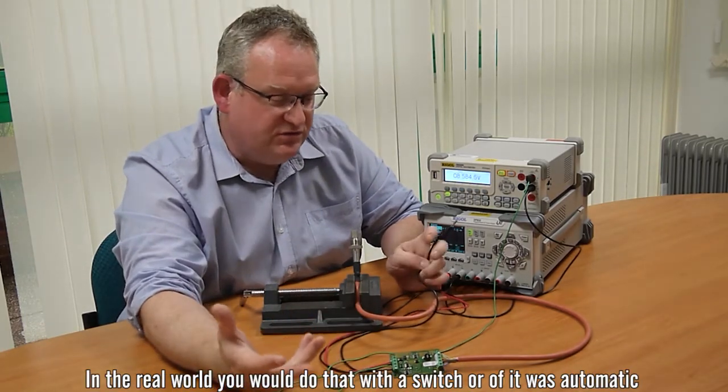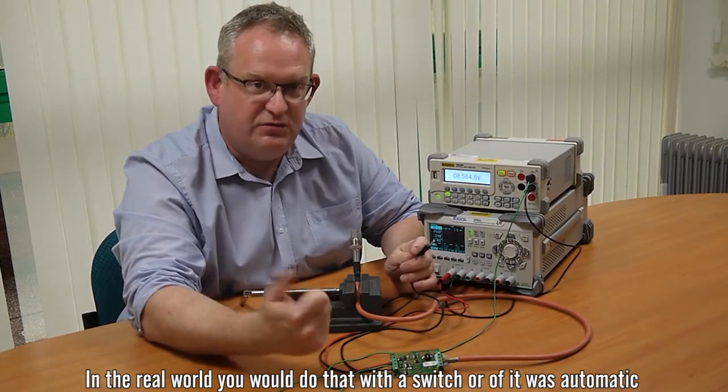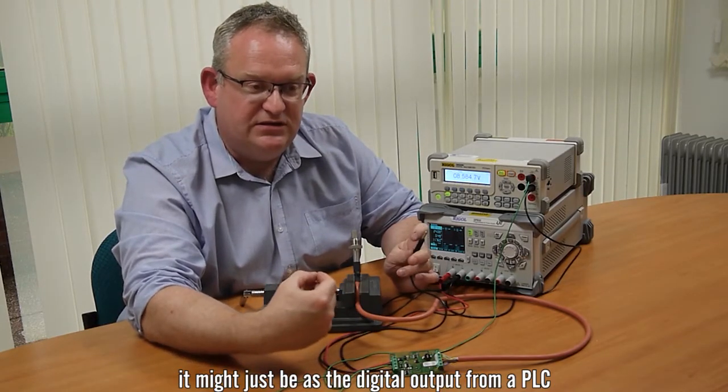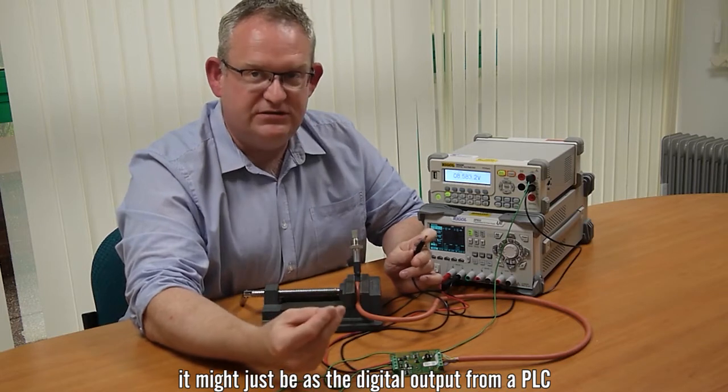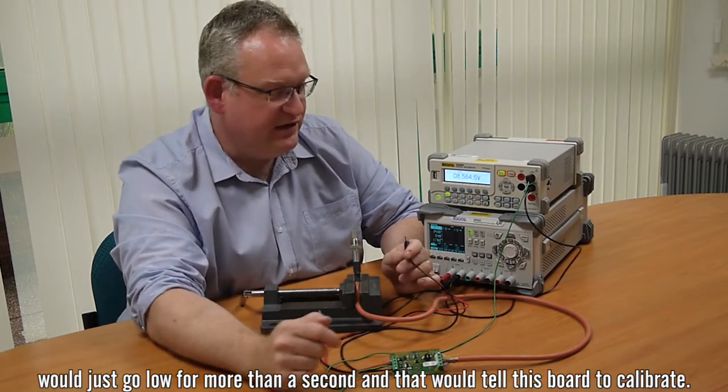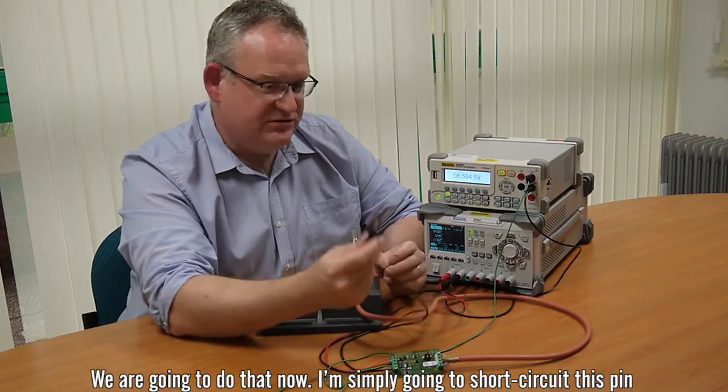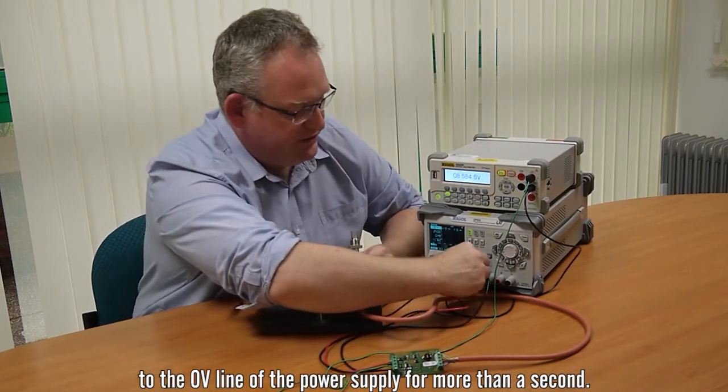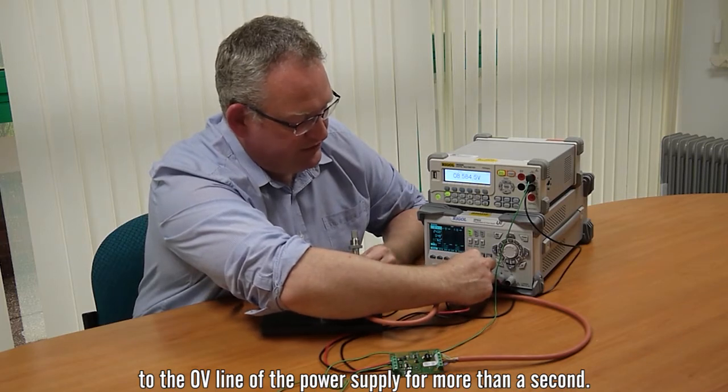We just have to short circuit that to 0 volts for a second or more. In the real world you would do that literally with a switch that someone might press or if it was automatic it might just be a digital output from a PLC that would just go low for more than a second and that would tell this board to calibrate. So I'm going to do that now, I'm simply going to short circuit this pin to 0 volt line of the power supply for more than a second.